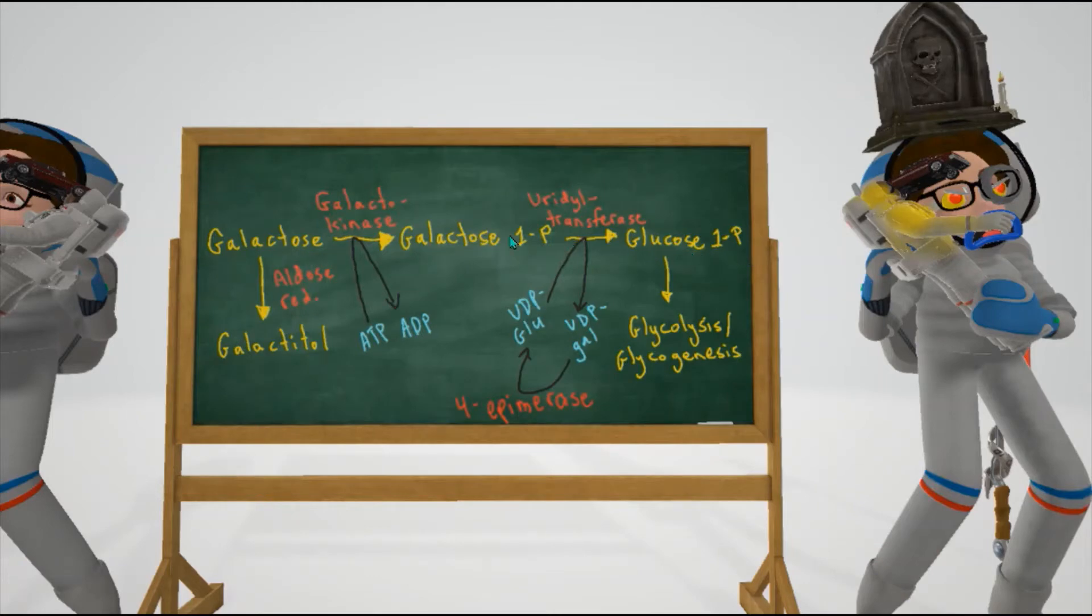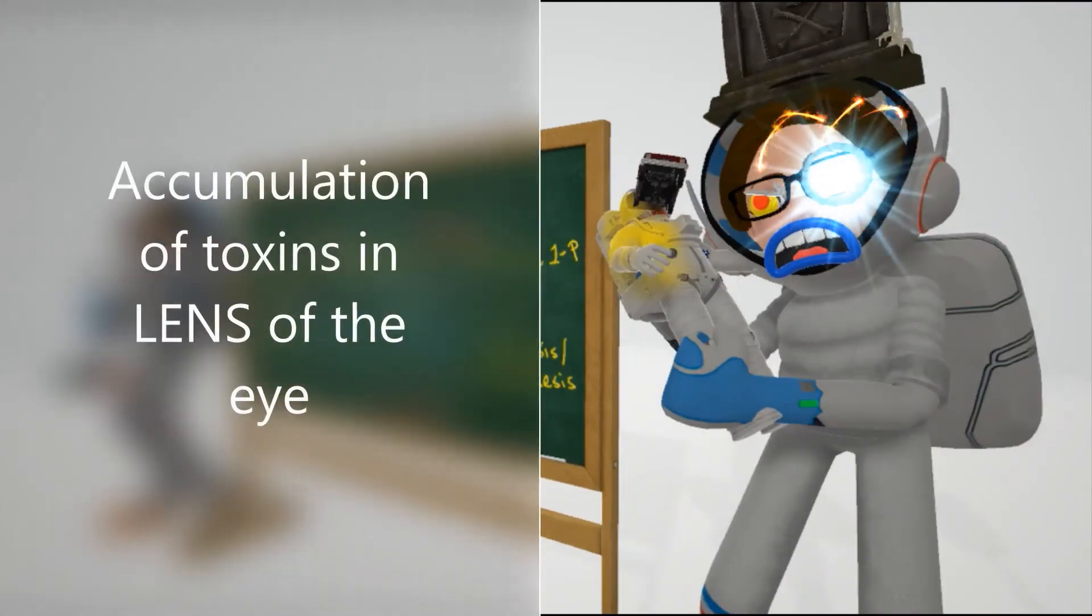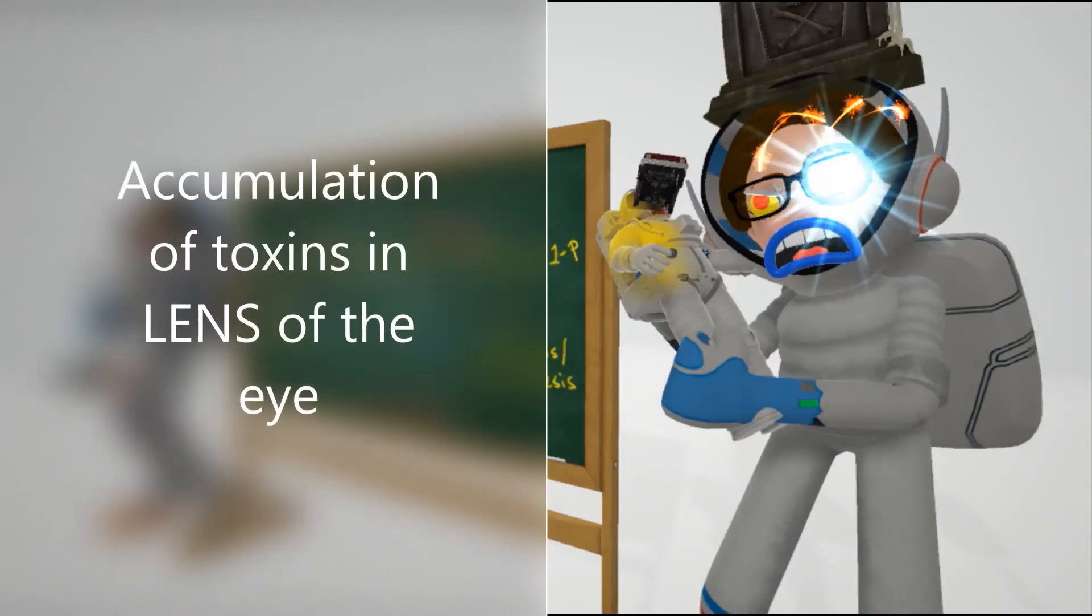then converted to glucose 1-phosphate through uridyltransferase. In classic galactosemia, there's an absence of galactose 1-phosphate uridyltransferase - that's why it's exploding. Toxic substances including galactitol can accumulate in the lens of the eye. This teacher has a big lens around her eye with stuff forming around it - remember the accumulation of toxins in the lens.